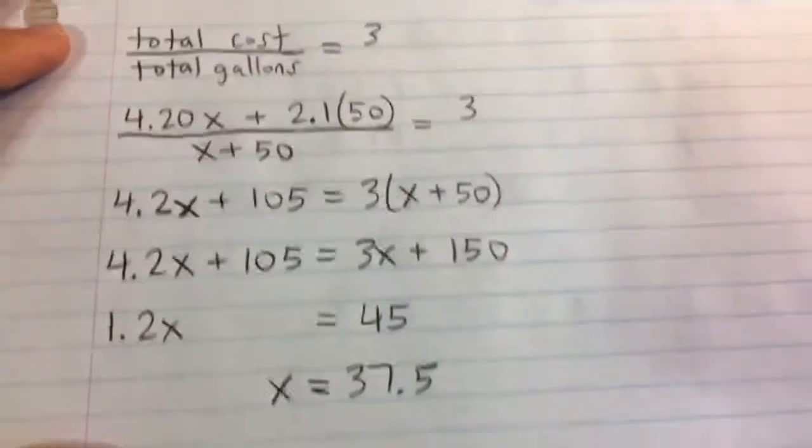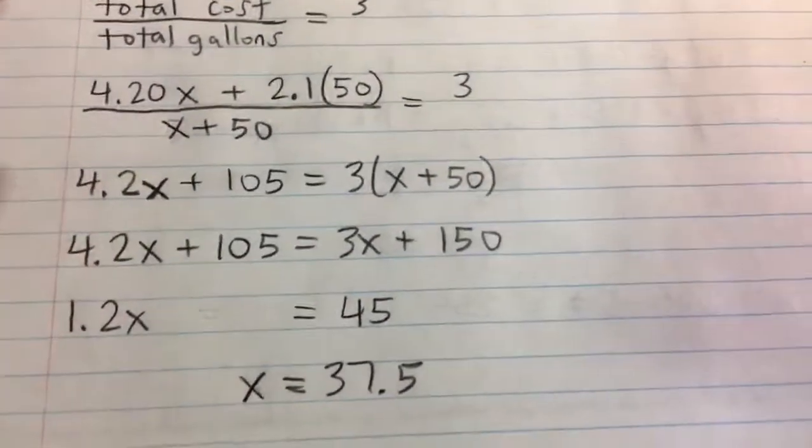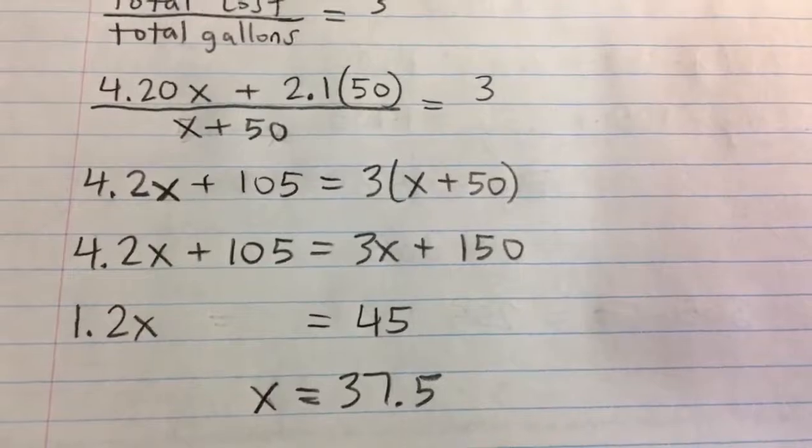We need 37.5 gallons of cranberry juice to make it exactly $3 per gallon.